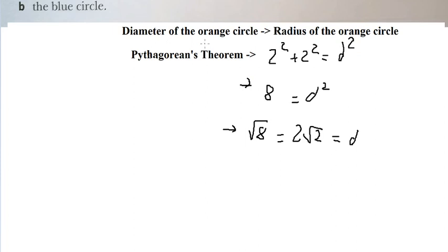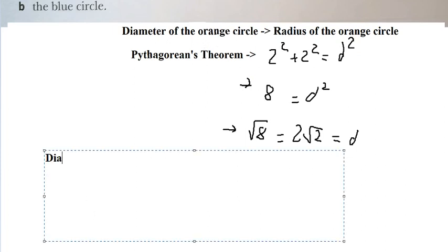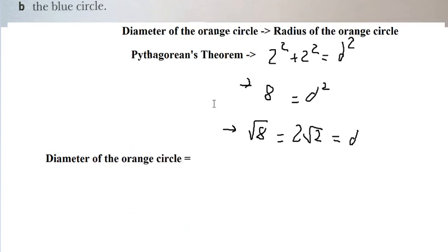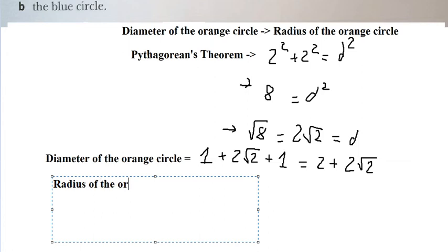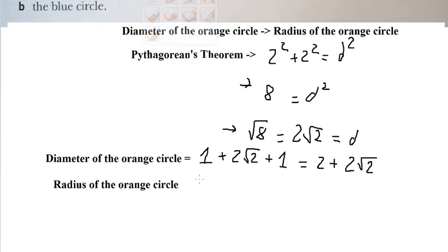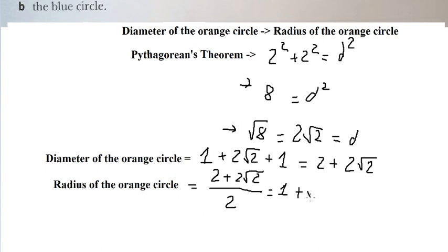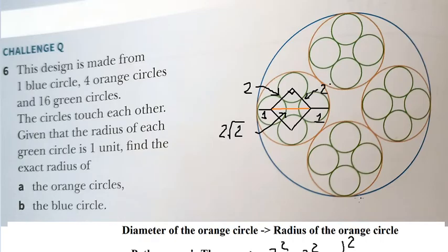Now we can find the diameter of the orange circle. We have one plus two times the square root of two plus one, which equals two plus two times the square root of two. Dividing by two gives us the radius of the orange circle: one plus the square root of two.